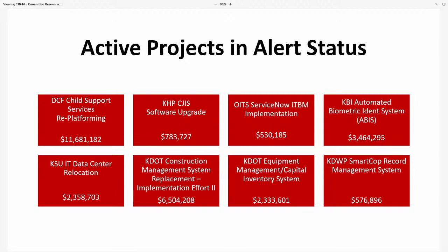The KBI Automated Biometric Identification System is delayed due to priority changes on project resources. KBI's steering committee approved a recast in January and assigned a contract PM; a recast plan will be submitted this month to re-baseline the project. The KSUIT data center relocation — stemming from a fire in the Hale Library a few years ago — is adjusting scope: the relocation will be considered complete upon finishing all networking and firewall connectivity, with server migration moved to daily operations. A scope change request will be submitted this quarter.